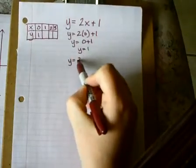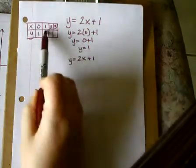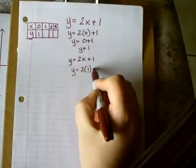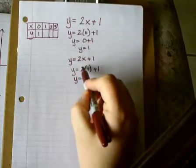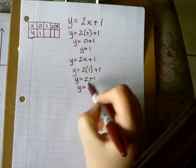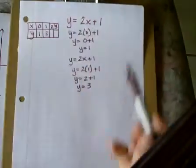Y equals 2x plus 1. This time I'll replace the x with a 1. So y equals 2 times 1, plus 1. So 2 times 1 is 2, plus 1. So y equals 3. So because I used 1, the matching answer then is 3.